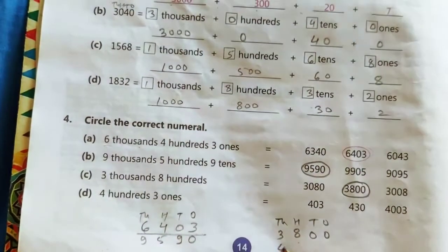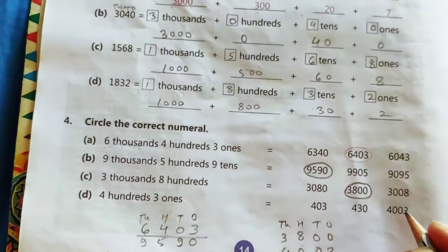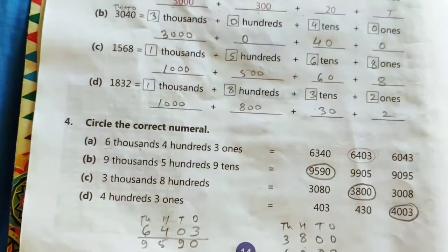Now the fourth one. 4,000 and 3 ones. So 0 here and 0 here also. 4, double 0, 3. This is the answer.